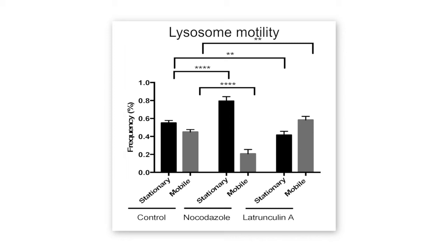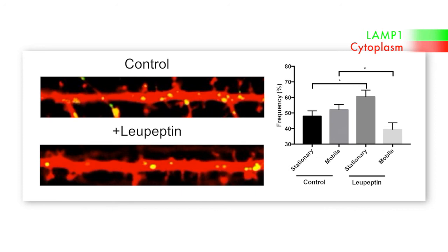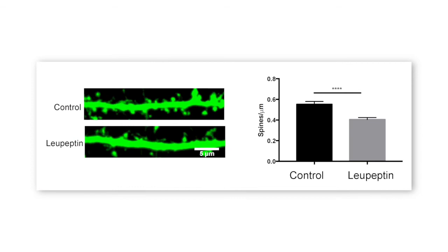Lysosome trafficking is also dependent on the organelle's activity, since treatment with the lysosomal protease inhibitor leupeptin impaired lysosomal motility. Moreover, leupeptin treatment reduced the number of dendritic spines, indicating that lysosomal trafficking and activity regulate synaptic remodeling.